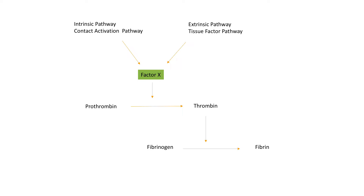Thrombin then converts fibrinogen to fibrin, and fibrin is required for formation of a blood clot. Once factor 10 is activated, it leads to continuation of the clotting cascade and production of fibrin. Factor 10 not only continues the clotting cascade but also results in significant amplification of it.